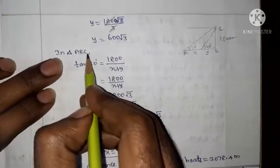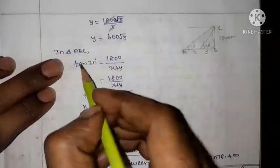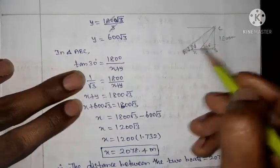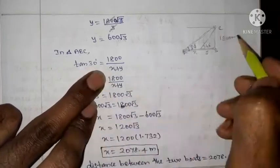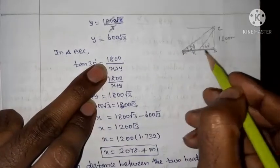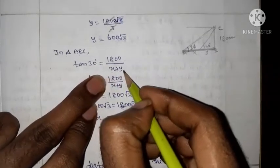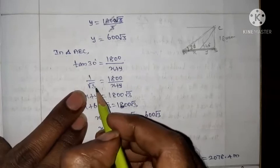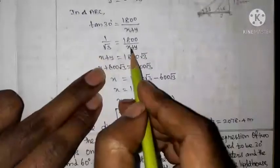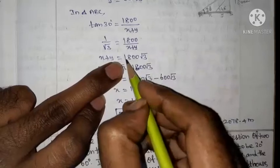Next, consider triangle ABC with a 30 degree angle. So tan 30 degrees equals opposite over adjacent, which is 1800 by x plus y. Therefore tan 30 equals 1 over root 3, giving x plus y equal to 1800 root 3.